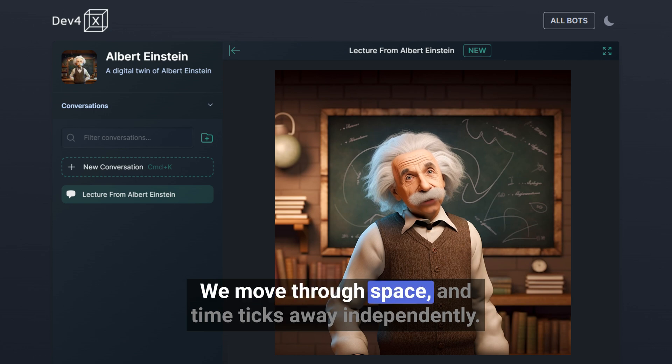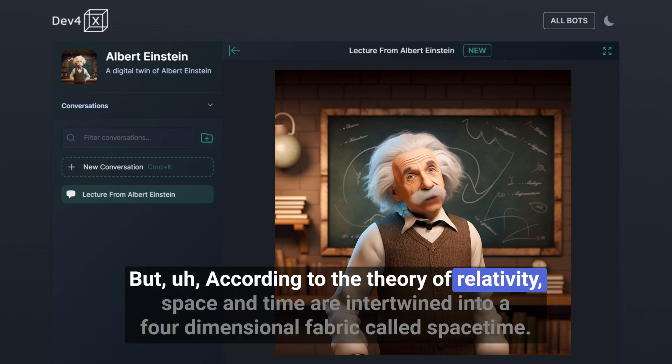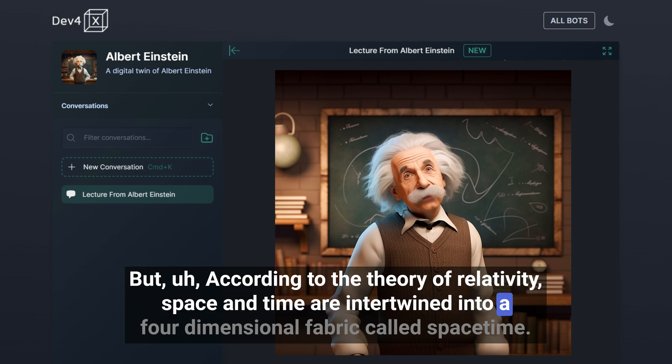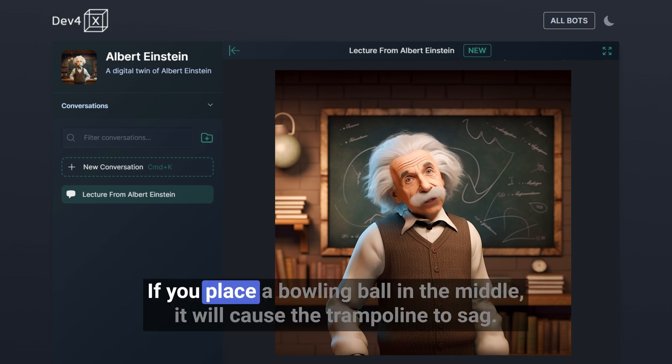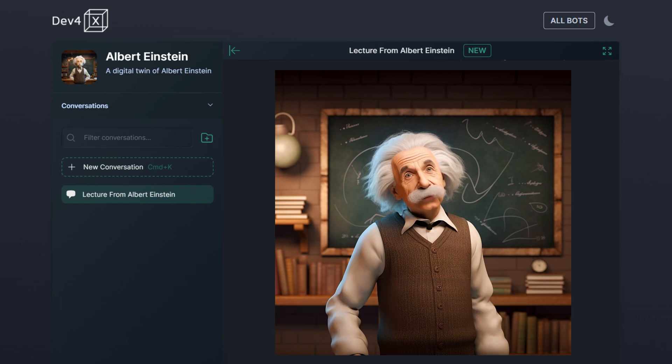We move through space and time ticks away independently. But according to the Theory of Relativity, space and time are intertwined into a four-dimensional fabric called space-time. Think of space-time like a trampoline. If you place a bowling ball in the middle, it will cause the trampoline to sag.